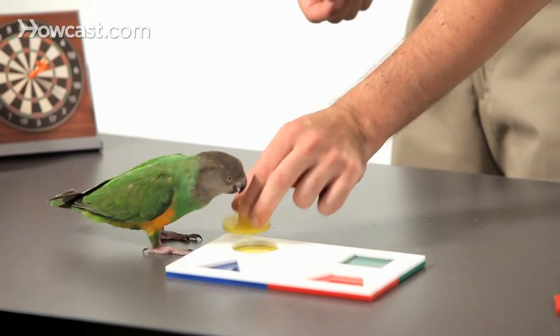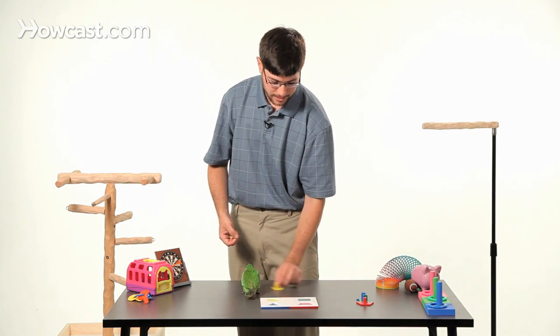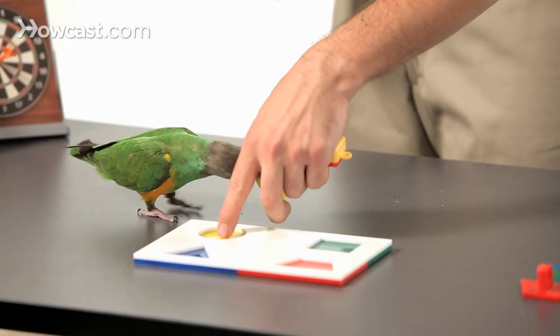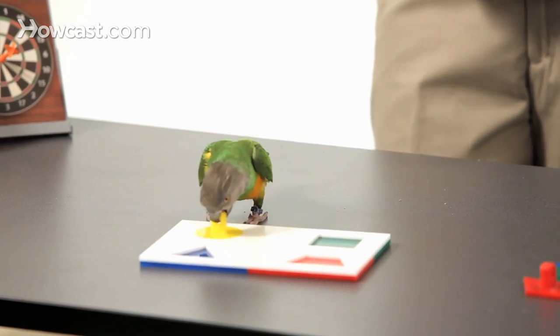If your parrot can just drop the circle anywhere in the vicinity, that's already worth clicking for and rewarding, but eventually you're always going to reward the parrot for dropping the circle closer and closer and into the slot. Fetch, good bird.